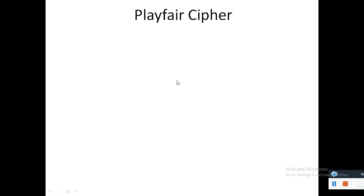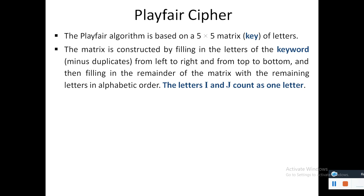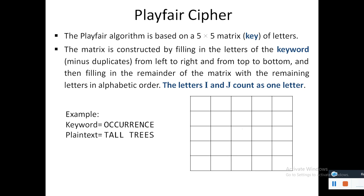In this video we will see how Playfair cipher works. This algorithm is based on a 5 by 5 matrix. It is constructed by filling the letters of the keyword minus duplicates from left to right and top to bottom. Let's see how it works. For example, we have the keyword occurrence and our plaintext is tall trees.